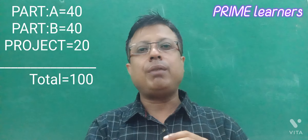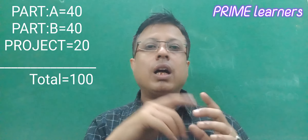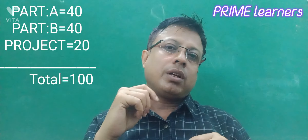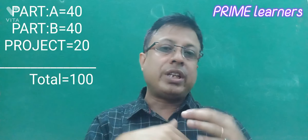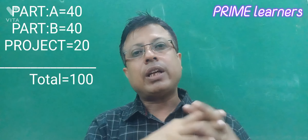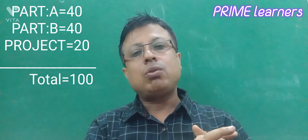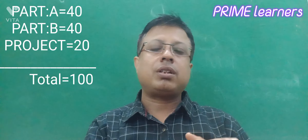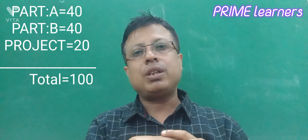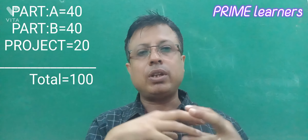Part A is 40 marks and Part B is also 40 marks, so 40 plus 40 is 80 marks. You also have 20 additional marks, making a total of 100 marks.